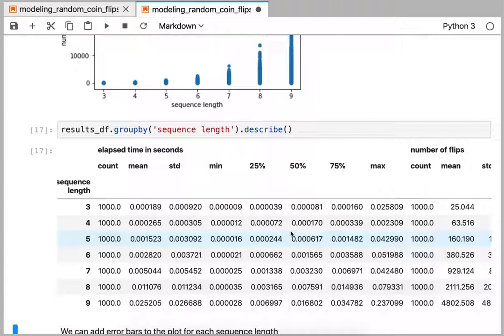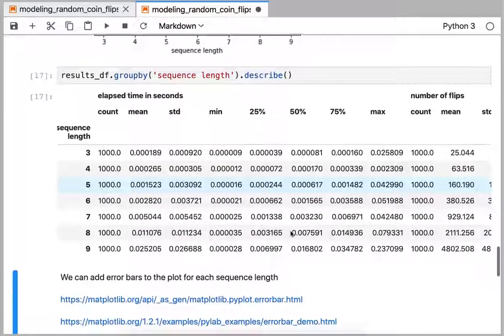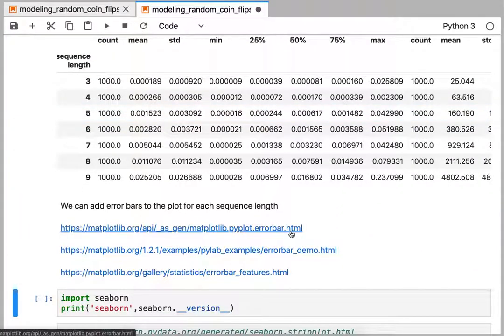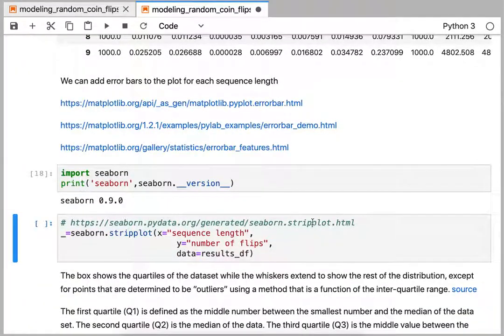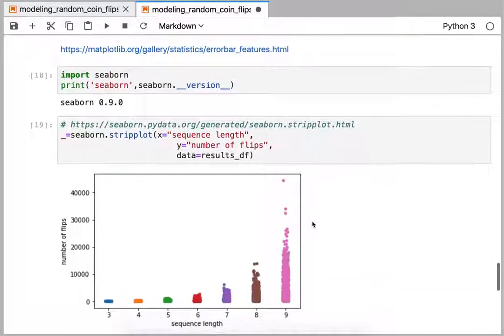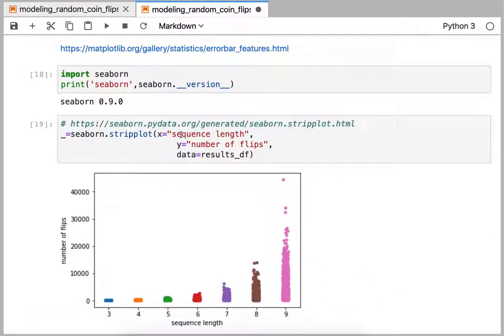So let's see if we can do slightly better than the table representing our data. So error bars are really where we're going here, and we'll use seaborn because it's pretty easy to use. We're just going to pass it in the same columns of sequence length and number of flips. And our first thing that we'll try is a strip plot.